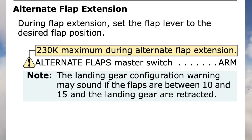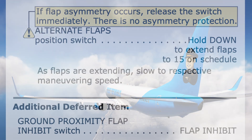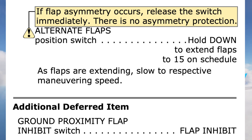Note: the landing gear configuration warning may sound if the flaps are between 10 and 15 and the landing gear are retracted. Note: the amber leading edge flaps transit light will stay illuminated until the flaps approach the flaps 10 position. Note: operation within the lower amber airspeed band may be needed until the leading edge flaps transit light extinguishes. If flap asymmetry occurs, release the switch immediately — there is no asymmetry protection. Alternate flaps position switch: hold down to extend flaps to 15 on schedule. As flaps are extending, slow to respective maneuvering speed.